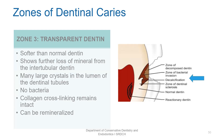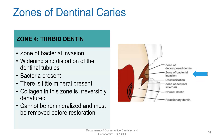The fourth zone is the zone of bacterial invasion and is characterized by turbid dentin. There is widening and distortion of the dentinal tubules. A lot of bacteria are present and collagen is irreversibly denatured. Since this collagen is irreversibly denatured by losing the cross-linking, it cannot be remineralized. Therefore, this turbid dentin must be removed. This is also one component of the infected dentin.